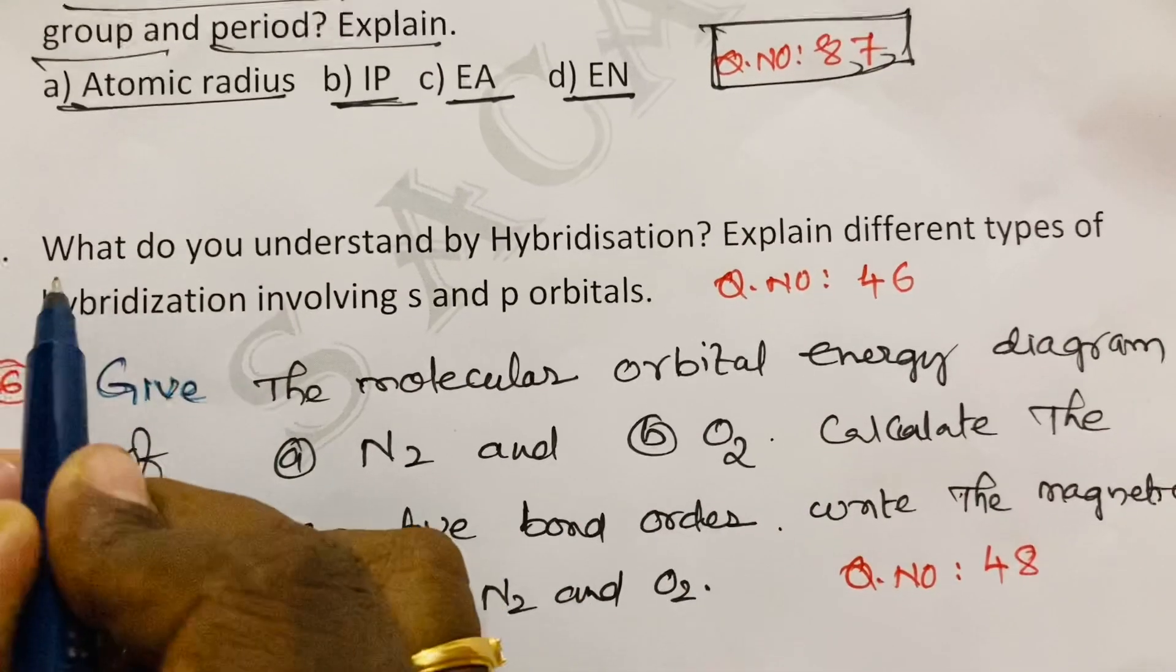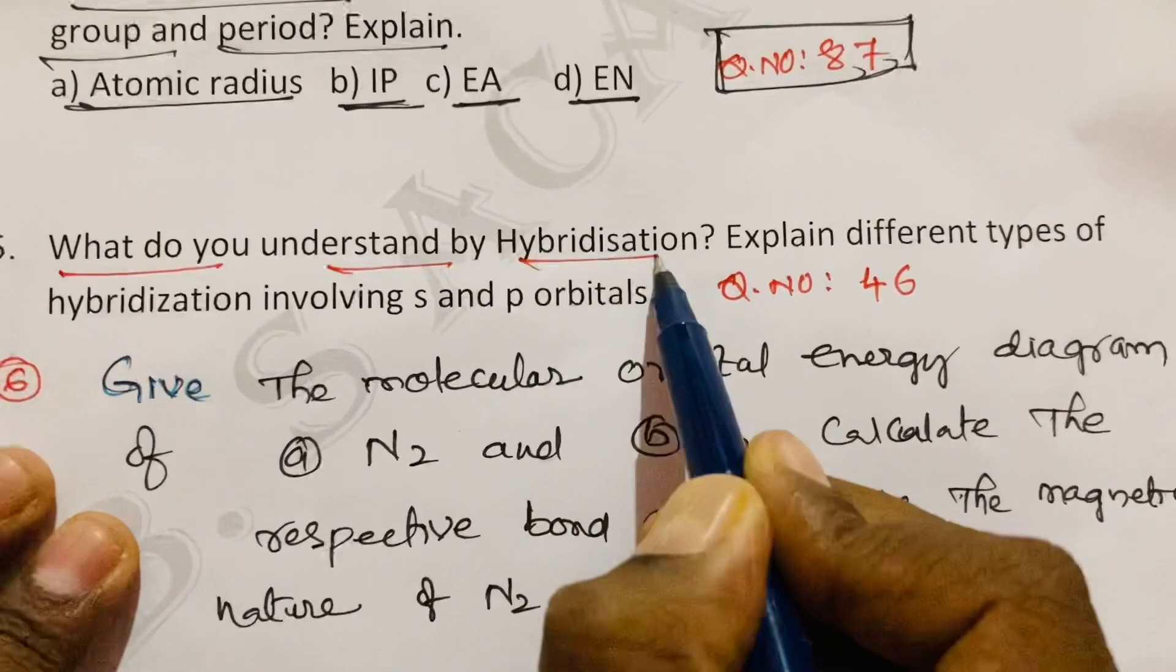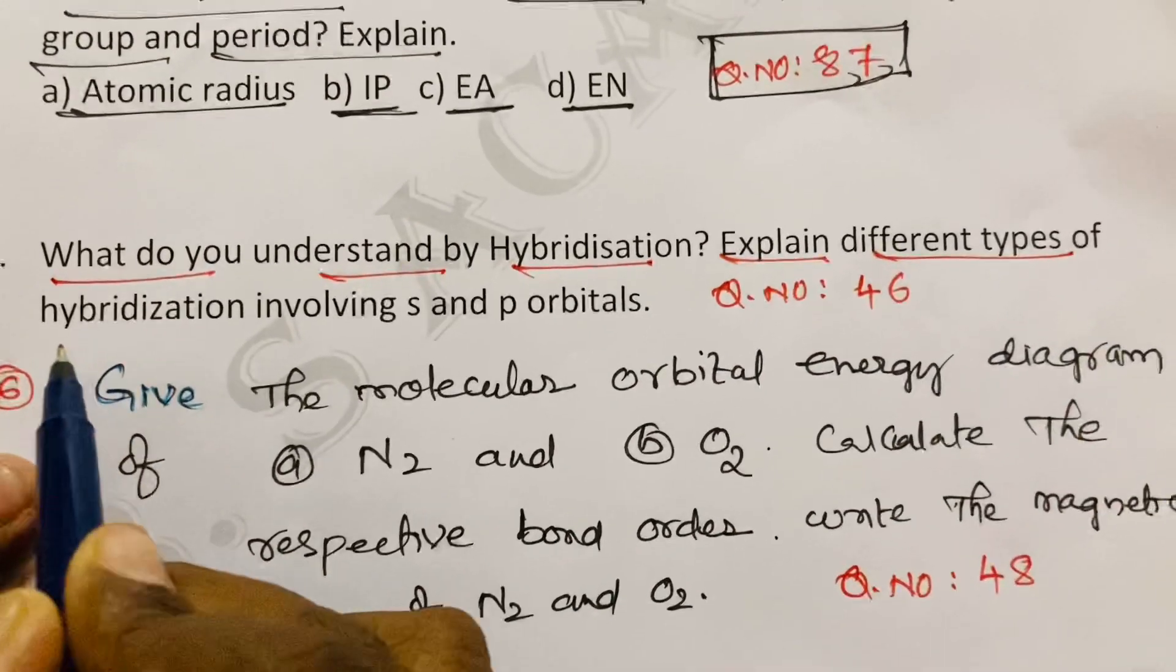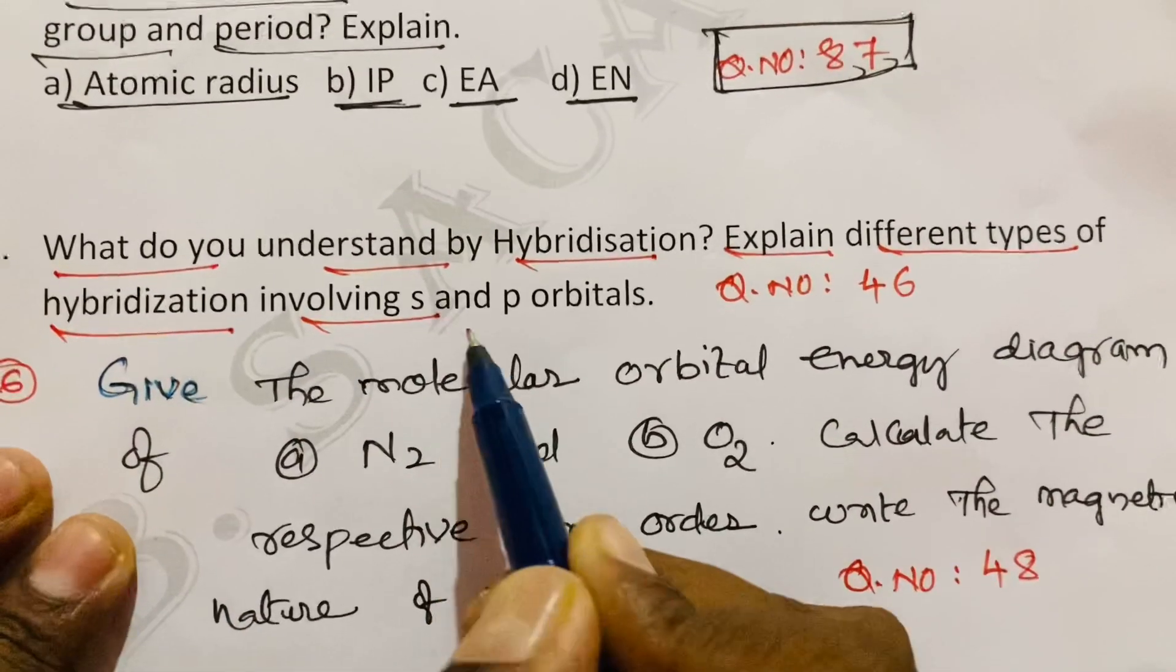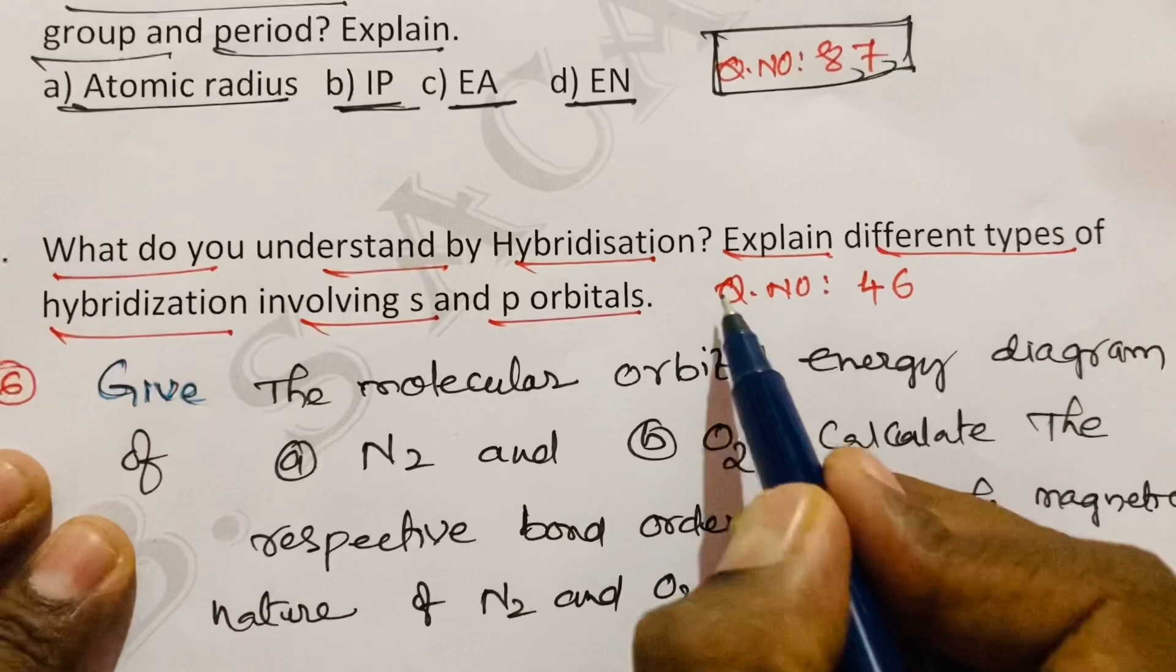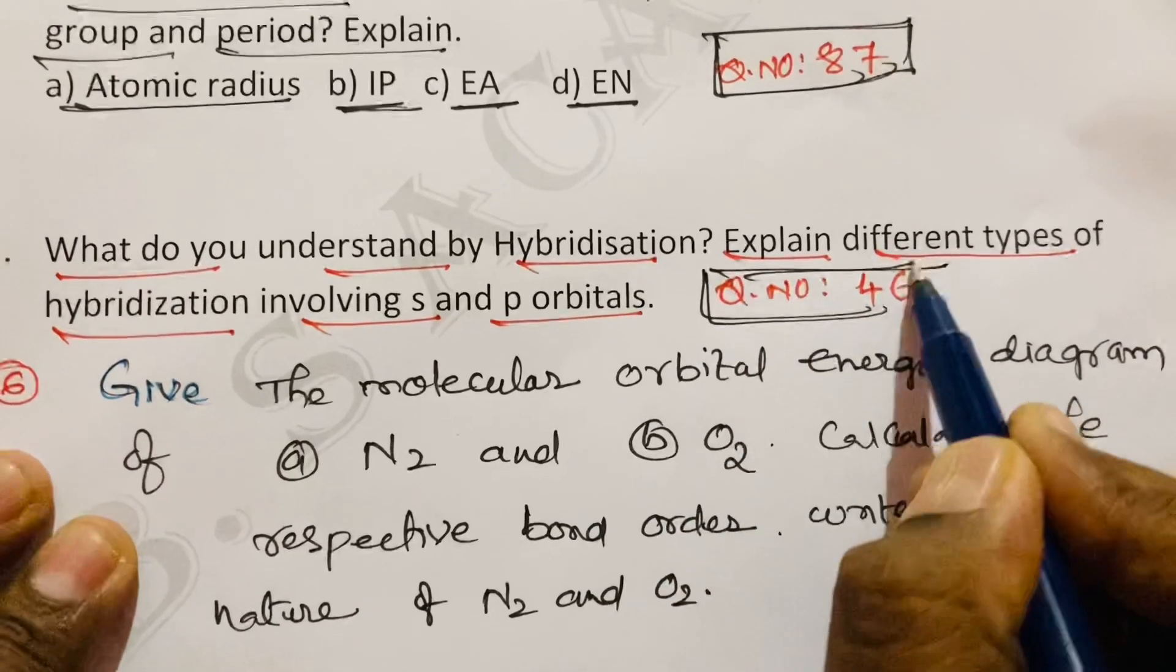Next question from chemical bonding. What do you understand by hybridization? Explain different types of hybridization involving s and p orbitals. That is question number 46 from Telugu Academy textbook.